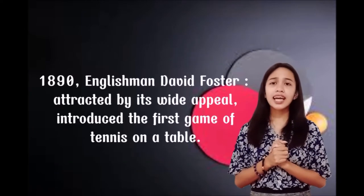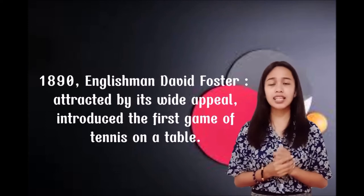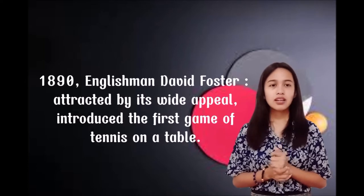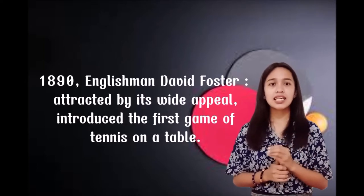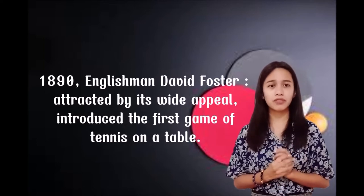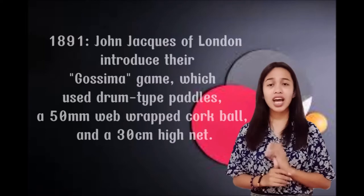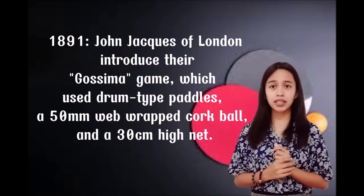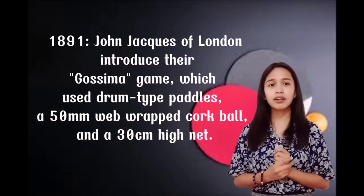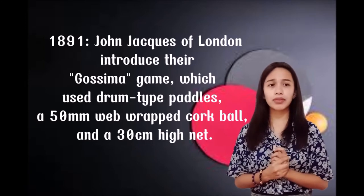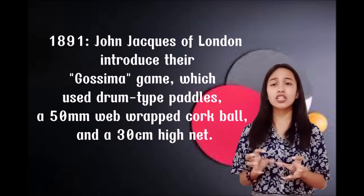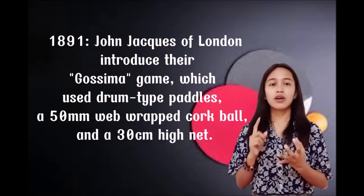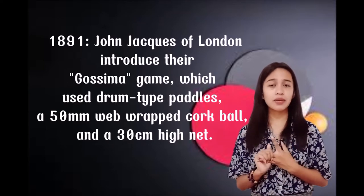In 1890, Englishman David Foster, attracted by its wide appeal, introduced the first game of table tennis on a table. Table tennis is considered to be discovered by Englishman David Foster. Then in 1891, John Jax of London introduced the Gossima game, which used drum-type paddles, a 50mm web-wrapped cork ball, and a 30cm high net.